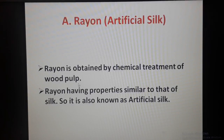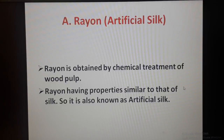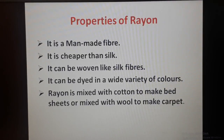Although wood pulp is a natural material, rayon is not a natural fiber — it is an artificial fiber. This is because rayon is obtained by chemical treatment carried out by human beings. So although rayon is obtained from wood pulp, it is still a man-made fiber.